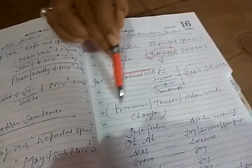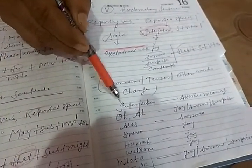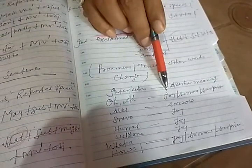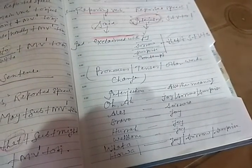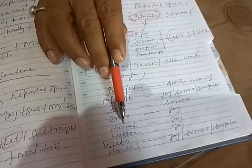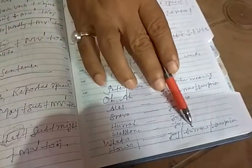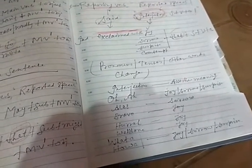One important thing: I have given you the interjection meanings for indirect speech. If the words are 'oh' or 'eh,' the meaning will be joy, sorrow, or surprise — depending on the sentence. 'Alas' means sorrow. 'Bravo' means joy. 'Hurray' means joy. 'Well done' means joy. 'What' and 'how' mean joy, sorrow, or surprise. These are the hints, these are the tips. If you follow them honestly and wisely, they will help you to solve your exclamatory sentences.